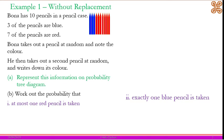Take time to read the question to make sure you understand the context. Example one: Bonner has ten pencils in a pencil case — three of the pencils are blue, seven of the pencils are red. Bonner takes out a pencil at random and notes the color, then takes out a second pencil at random and writes down its color. You are supposed to represent the information on a tree diagram and also work out the probability for at most one red pencil being taken, and also exactly one blue pencil being taken.